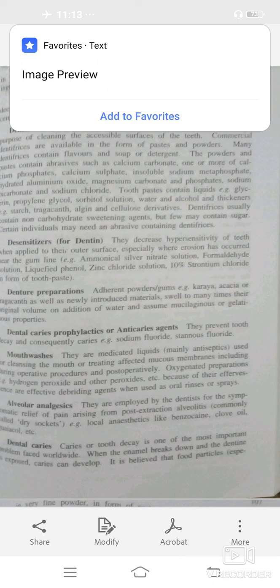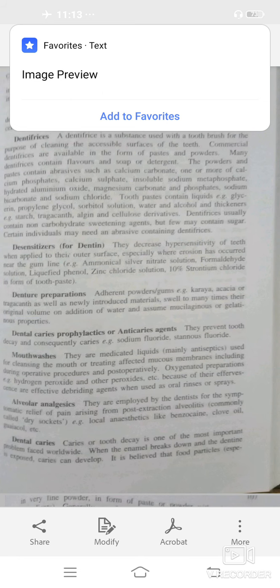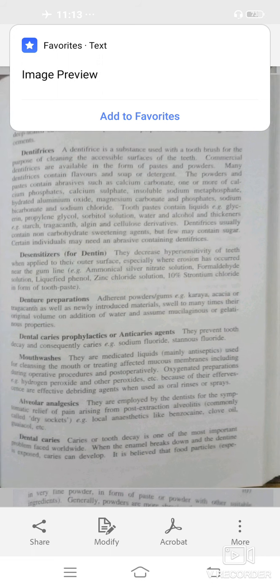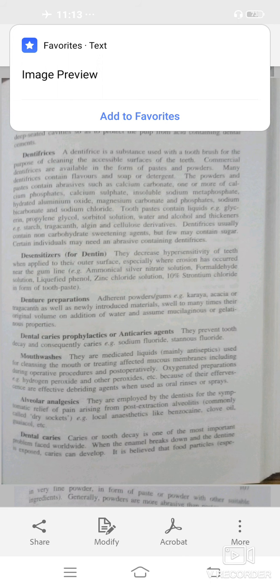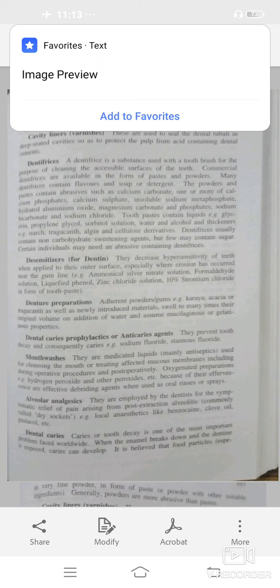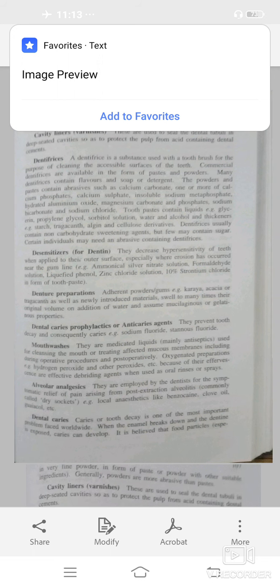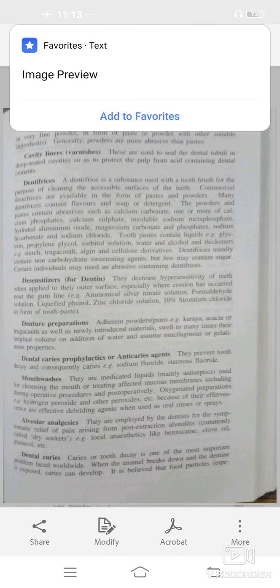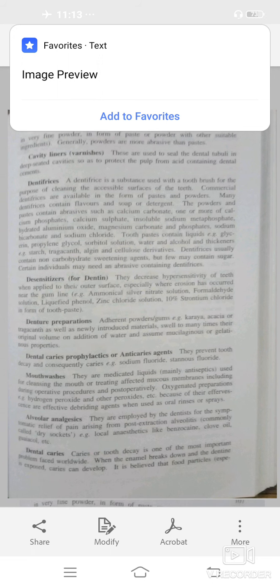For example, ammonium silver nitrate, formaldehyde, like Sensodyne paste which decreases the hypersensitivity of teeth. Next, denture preparations like gum powders, acacia, tragacanth. Dental caries or anti-caries which prevent tooth decay or caries like stannous or sodium fluoride. Mouthwash for cleansing the mouth or effect on mucous membranes during operative procedures like hydrogen peroxide. Alveolar analgesics for pain relief from post-extraction alveolitis like dry sockets. Local anesthetics like benzocaine and clove oil are used.